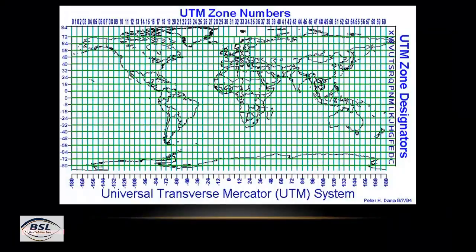This shows the UTM zone numbers for the Universal Transverse Mercator system. The total meridian lines are divided zone-wise from 1 to 60, covering 360 degrees — each zone is 6 degrees because 6 multiplied by 60 equals 360. Below you can see that 0 represents the prime meridian, to the right is the eastern meridian, to the left is the western meridian up to 180 degrees. The 0 degree horizontal line is the equator, above which is 84 degrees north and below is 80 degrees south.